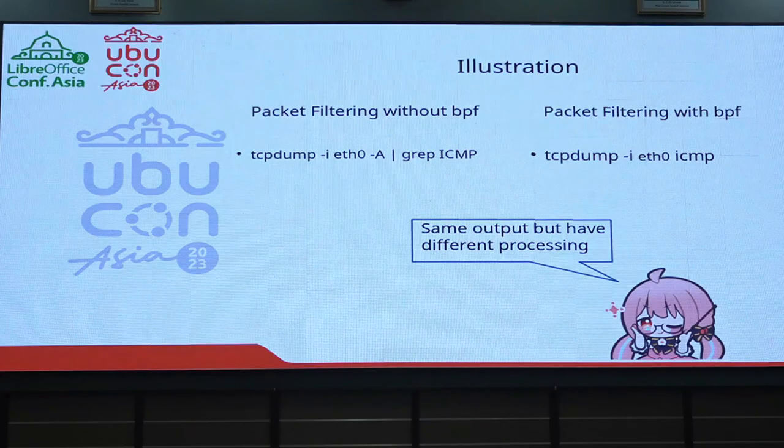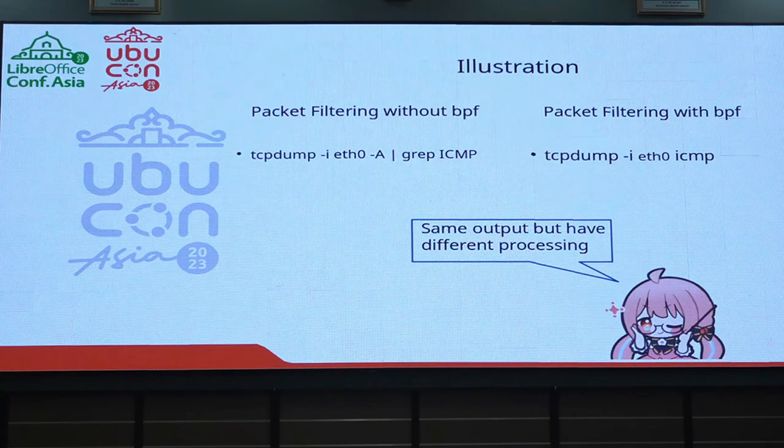Here's the illustration. If you work in IT infrastructure, especially in networking or DevOps, you should know tcpdump. Previously, the packet filter without BPF would filter in user space — you can grab packets in user space — and that makes CPU and memory usage go higher, because we are filtering packets in user space itself. But with BPF, we filter packets in place, in the kernel itself.